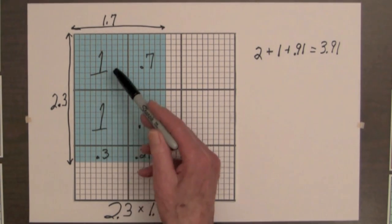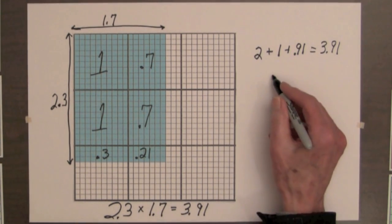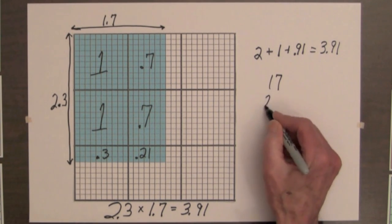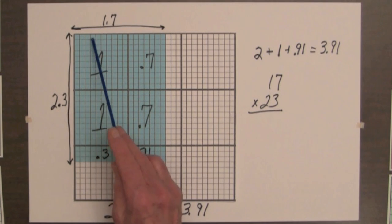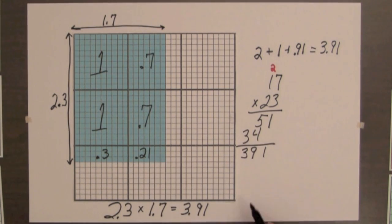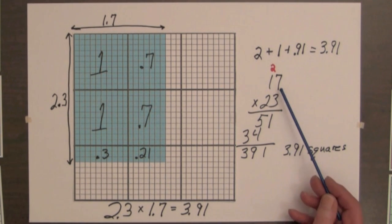Another method of determining the number of whole squares and parts of a square in the shaded region is to multiply 23 times 17, since there are 23 small squares along this edge and 17 small squares along this edge. And we know this equals 3 and 91 hundredths squares, because there are 100 parts in each unit square. The algorithm for multiplying whole numbers, shown here, and the algorithm for multiplying decimals are similar. For example, the algorithm for multiplying 2 and 3 tenths times 1 and 7 tenths would look like this.